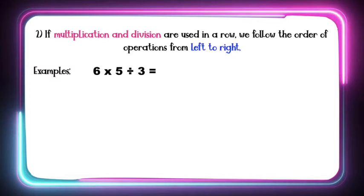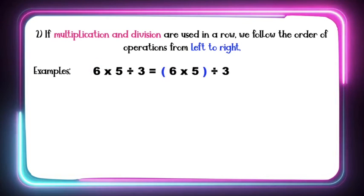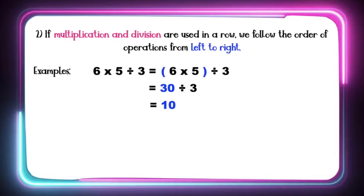6 times 5 divided by 3. As you can see, children, from the left we have the multiplication first, so we are going to multiply first. 6 times 5 is equal to 30, then we are going to divide it by 3. 30 divided by 3 is equal to 10. So 6 times 5 divided by 3 is equal to 10.